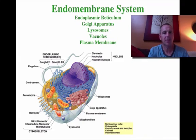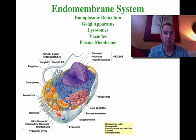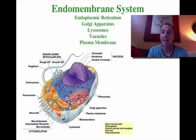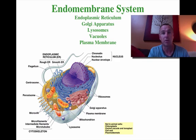I'm going to talk about the endomembrane system, which is composed of things that have membranes, such as the endoplasmic reticulum, the Golgi apparatus, the lysosome, the vacuole, and the plasma membrane. In this video, I'm going to talk about all of them but the plasma membrane. We're going to do that a little bit later on all by itself.